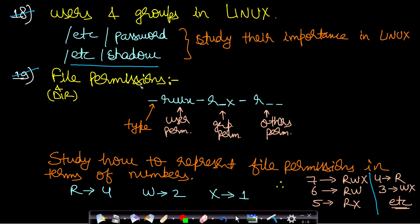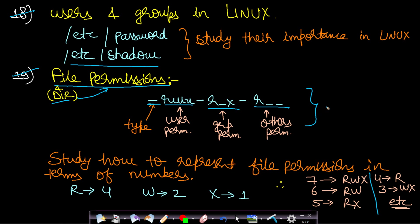The nineteenth topic is file permissions, which is also very important. Every file will have different permissions for different types of users, represented using file permissions. Directories are also represented using these types of permissions. The first letter represents the type, the next three letters represent user permissions, the next three represent group permissions, and the final three represent others' permissions.